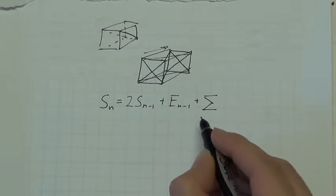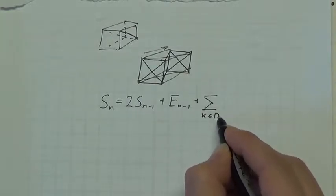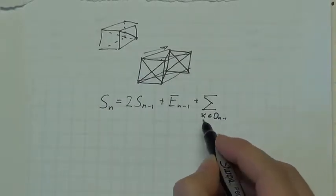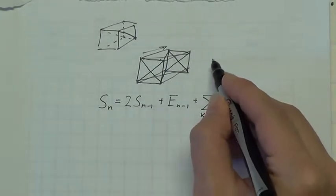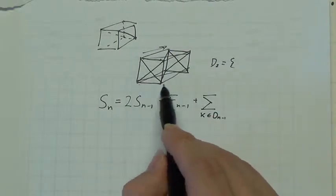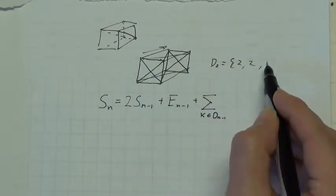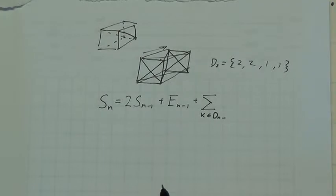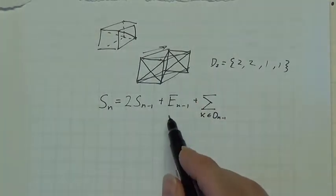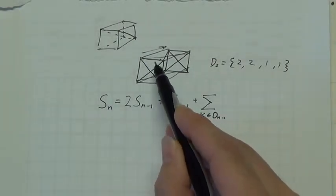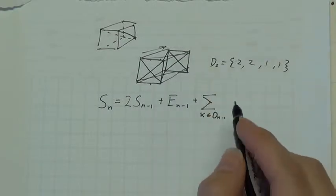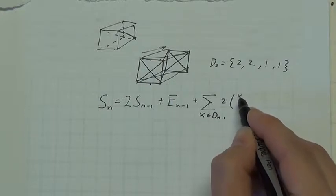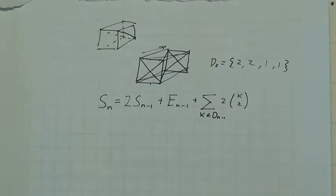Here k is going to be an element of what I call a directed edge set. These elements of k are the numbers of parallel lines in each direction. So for d2 it's going to be the set made up of 2, 2, 1, 1. We don't want to count an edge to itself because we've already got those squares. But for two different parallel edges — call this 1 and this 2 — 1 to 2 gives us a square, and also 2 to 1 gives us a square. So, twice the number of ways there are to choose from those k parallel lines two of them. The problem now is how to construct this d, this directed edge set.